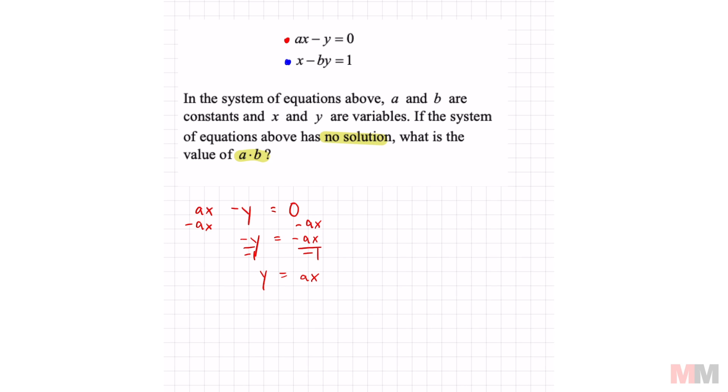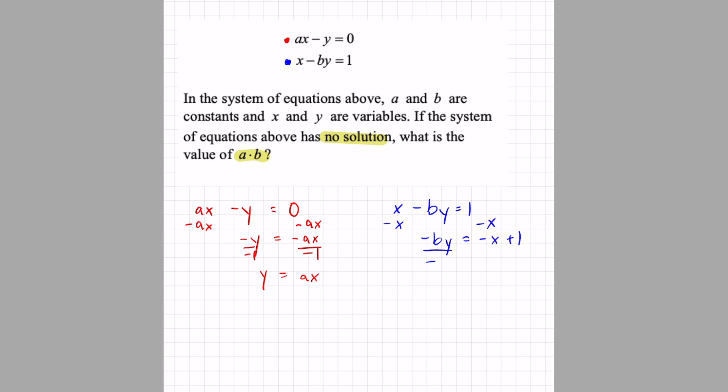Let's solve the blue equation for y as well. x minus by equals 1. Subtract x. I get negative by equals negative x positive 1 divided by negative b. I get y equals 1 over b times x plus negative 1 over b.